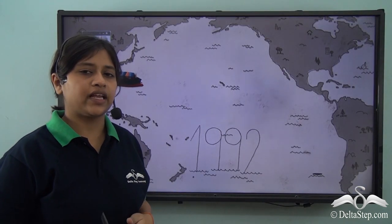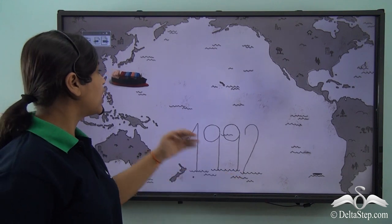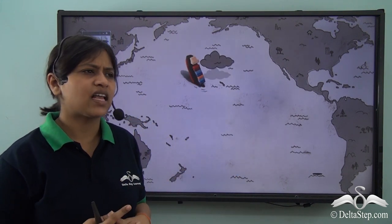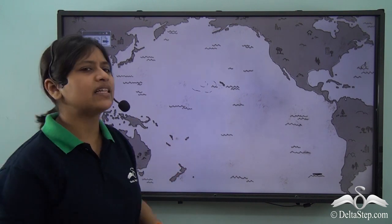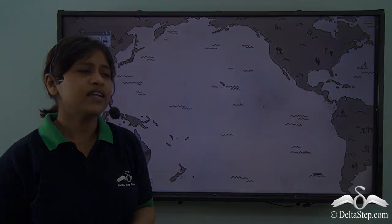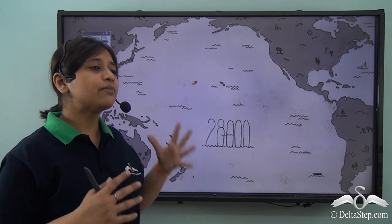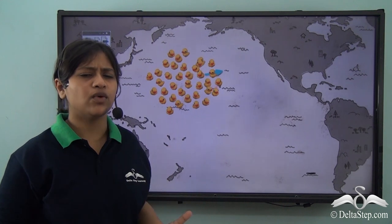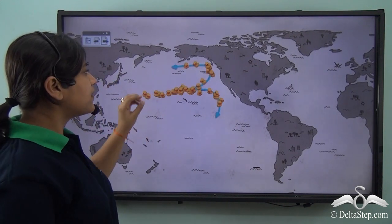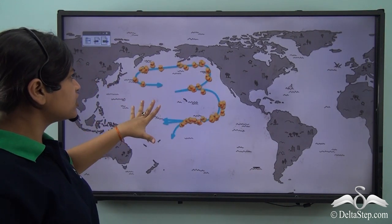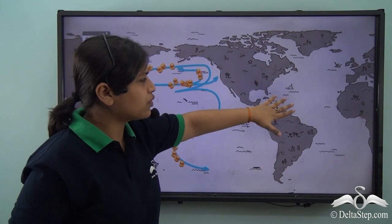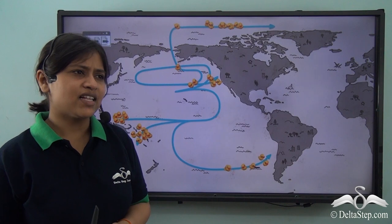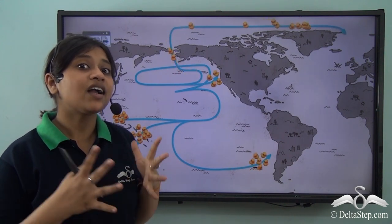Here's an interesting story. In 1992, a ship sailed with 28,000 plastic ducks and somehow they were submerged in the Atlantic Ocean. These plastic ducks emerged after many years at different parts of the world. As you can see, they moved from the Atlantic Ocean to different parts of the world and were found. So what does this tell us? This tells us that the oceans are connected.